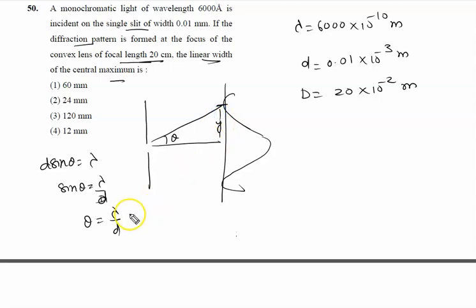Theta is given by y upon this distance, which is capital D. This implies that y is written as lambda D by d. We have to calculate the complete linear width, means we have to calculate 2y.